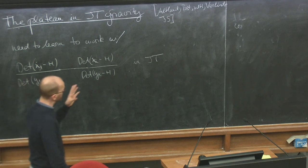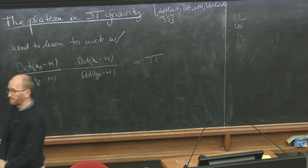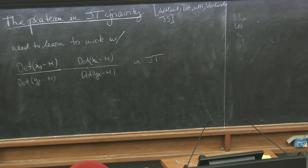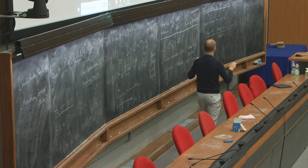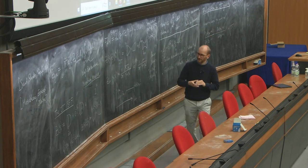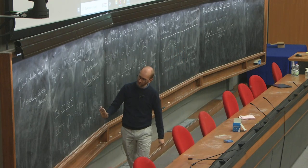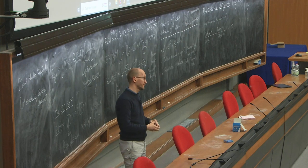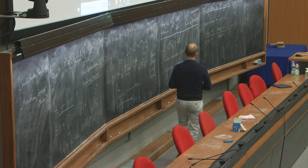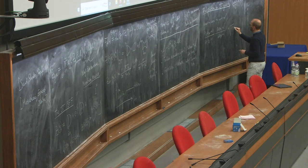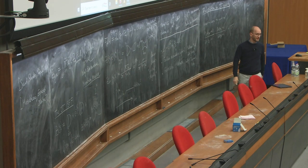The approach we chose is one referred to as universe field theory — you want some theory that allows you to create these boundaries, create an arbitrary number of them, and calculate correlations. If you think of this as a string worldsheet theory, this structure is actually a string field theory. But if you say string field theory, most people leave the room. Let's call it more evocatively universe field theory.